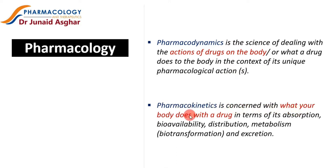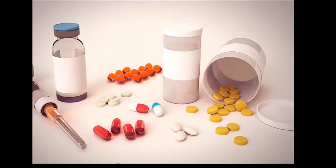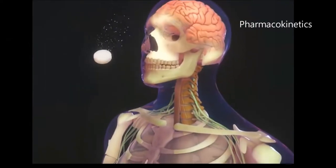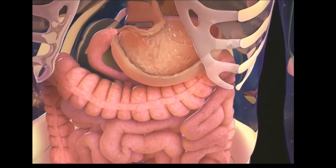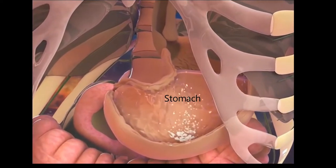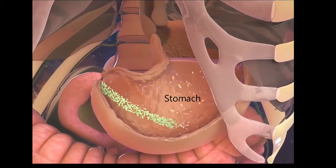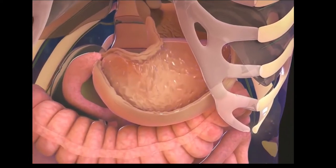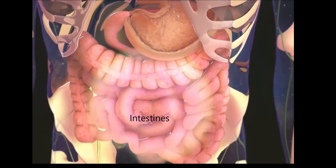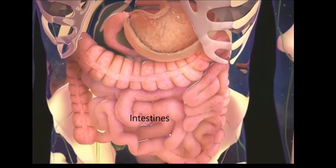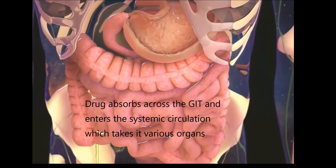Pharmacokinetics, on the other hand, is concerned with what your body does with a drug in terms of its absorption, bioavailability, distribution, metabolism or biotransformation, and excretion. Think about what happens when you eat food or swallow a tablet or a capsule — they travel from your mouth to your stomach and then to your intestines. Along each step of the process, the drug or medication gets disintegrated, dissolved, and absorbed across the GIT into your bloodstream, reaching different organs including the site of action. So basically, pharmacokinetics is all about the kinetics or movement of a drug molecule from your bloodstream to the site of action and eventually the site of elimination.